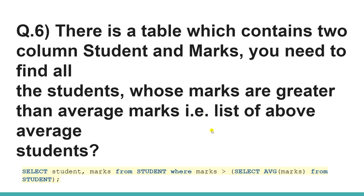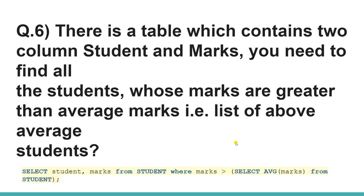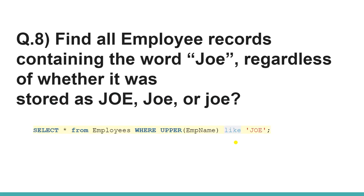This next one looks big but is very simple. The question is to list all students who got marks greater than the average of their class. You select the average in the subquery and apply the condition where marks are greater than the average of that class.